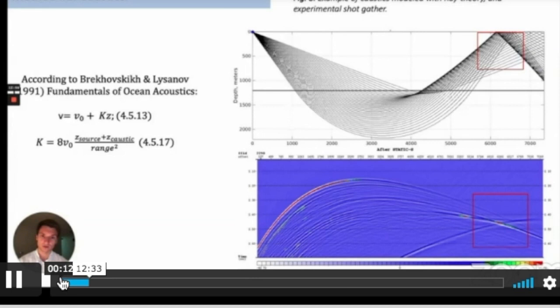Now let's focus on this part. If we know location of this caustic, if we know depth of this caustic in the position of the caustic, if we know depth of the source, if we know range between them, and if we know velocity in the interface, we can estimate k, the velocity gradient. We decided to model the shot gather, the same shot gather represented here.